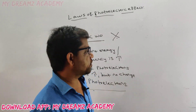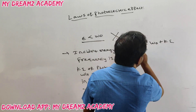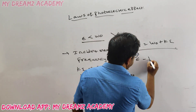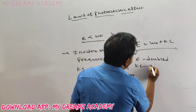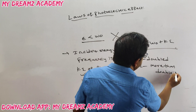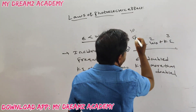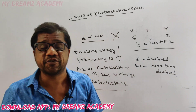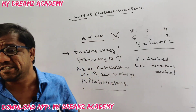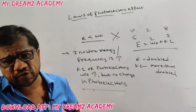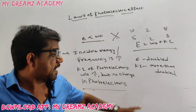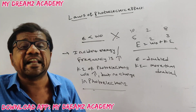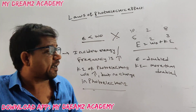Here is how the question will look: E = W-naught + KE, and work function is constant. If incident energy is doubled, kinetic energy will be more than doubled. For example, if E = 5, W = 2, then KE = 3. If E = 10, KE = 8 — which is more than doubled. If incident energy is tripled, kinetic energy will be more than tripled. If incident energy is halved, kinetic energy will be less than half. This is the basic principle.